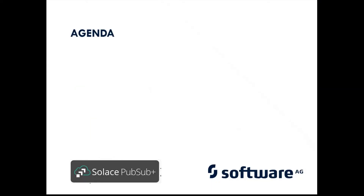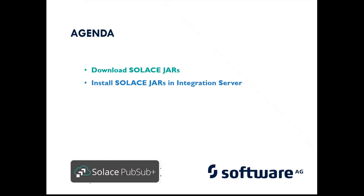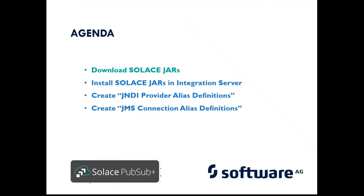So first off, what are the high-level steps involved? We need to actually download the Solace jars — there are three jars that need to be downloaded. We then need to place these Solace jars in a location on the Integration Server. Then we have to create a JNDI provider alias on the Integration Server, followed by creating a JMS connection alias. The steps highlighted in blue are the ones you have to do on Software AG's Integration Server. And finally, we need to create a connection factory on Solace.